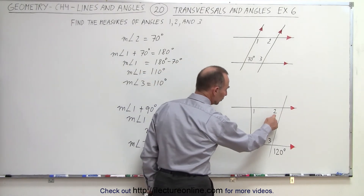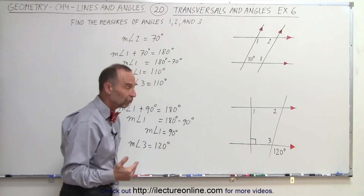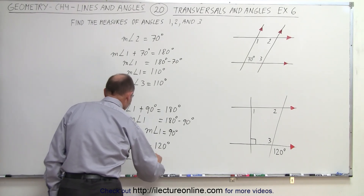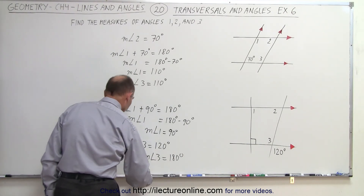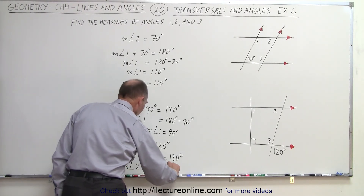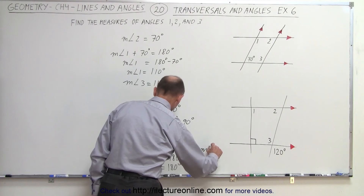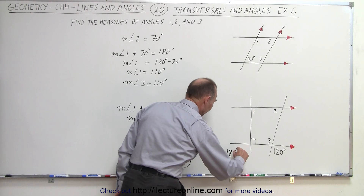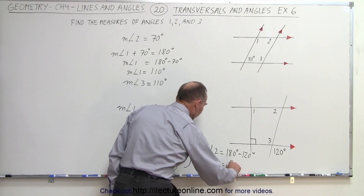Finally, we can see that angle 2 and angle 3 are consecutive interior angles, and we know that their measures must add up to 180 degrees, which means that the measure of angle 2 plus the measure of angle 3 equals 180 degrees. We can replace the measure of angle 3 with 120 degrees, so the measure of angle 2 plus 120 degrees equals 180 degrees. Subtracting 120 degrees from both sides, the measure of angle 2 is equal to 180 minus 120. Therefore, the measure of angle 2 must equal 60 degrees.